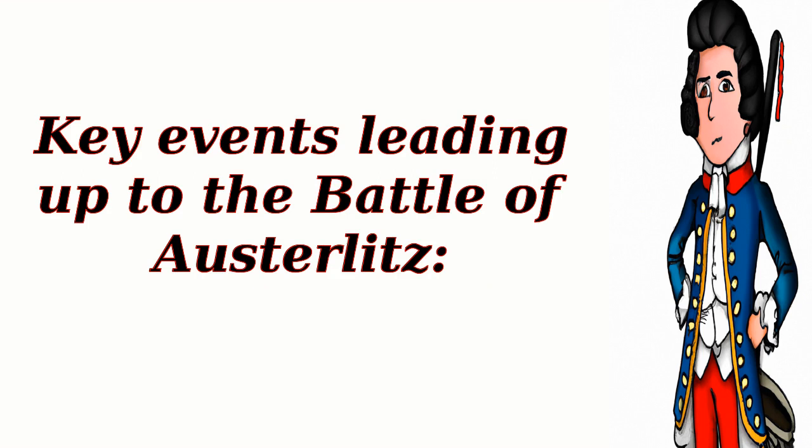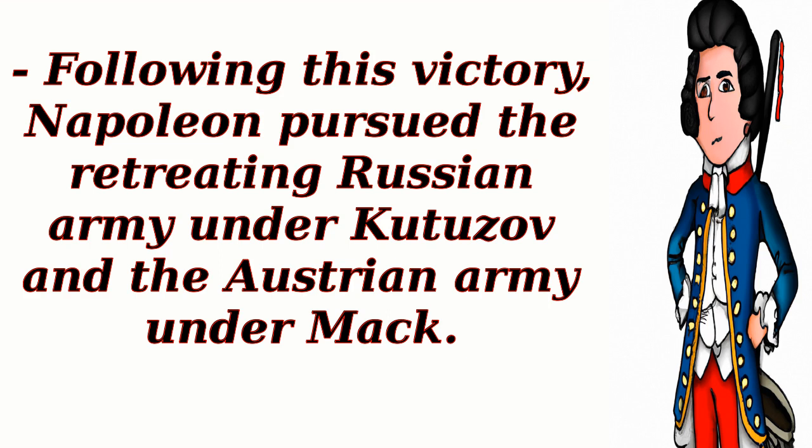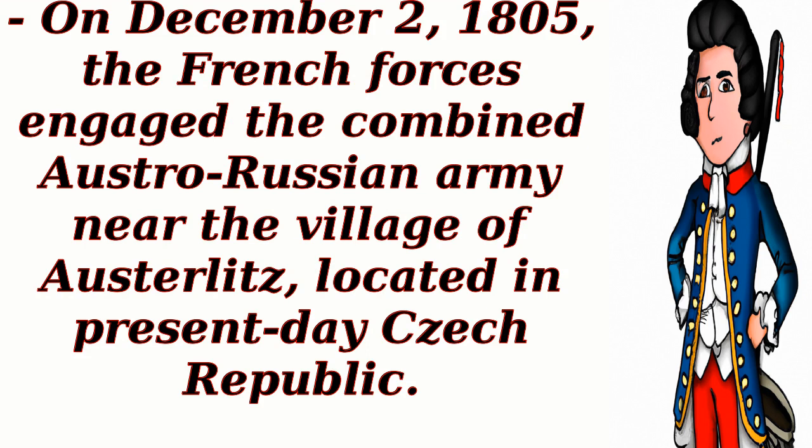5. Key events leading up to the Battle of Austerlitz. In 1805, Napoleon had successfully defeated the Austrian and Russian armies at the Battle of Ulm, forcing the Austrians to surrender. Following this victory, Napoleon pursued the retreating Russian army under Kutuzov and the Austrian army under Mack. On December 2nd, 1805, the French forces engaged the combined Austro-Russian army near the village of Austerlitz, located in present-day Czech Republic.